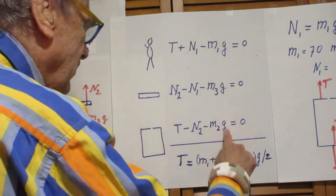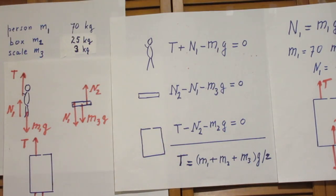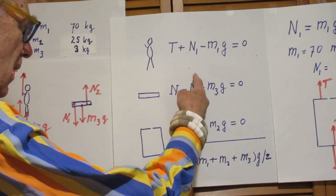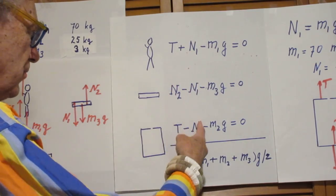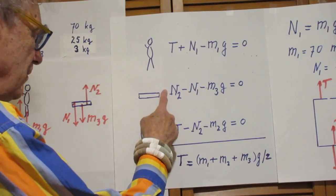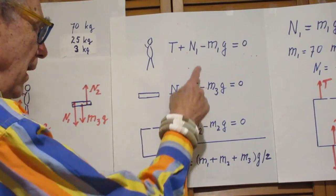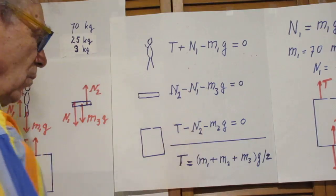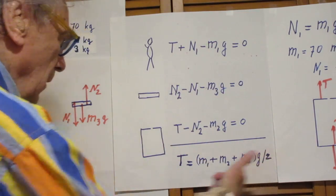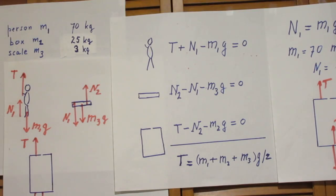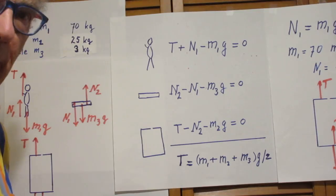Now, the easiest is to add them all three. Because if you add them all three, N1 will disappear, and N2 will disappear. Because there's a plus N2 and a minus N2, and there's a plus N1 and a minus N1. And so you immediately solve for T. And this is the result. T is m1 plus m2 plus m3 times g divided by 2.